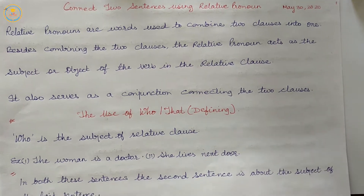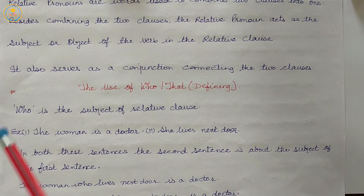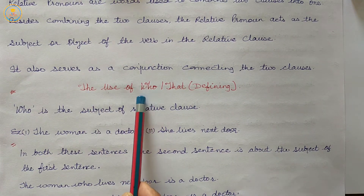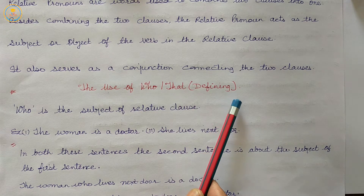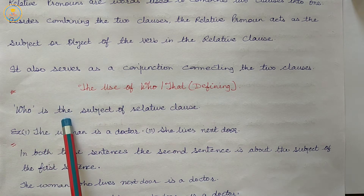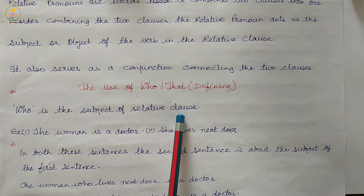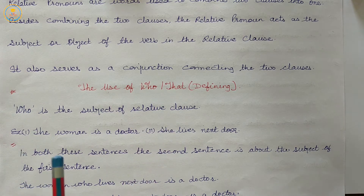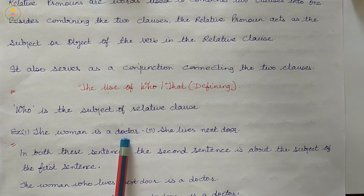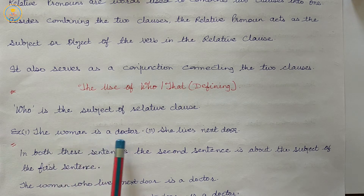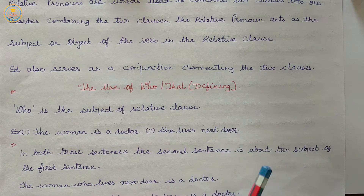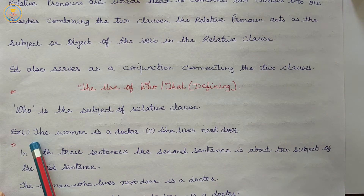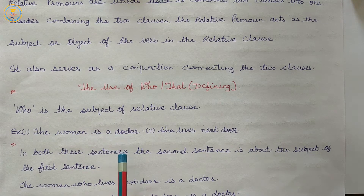Let us start. The first use is who or that in a defining clause. Who is the subject of the relative clause. Example: the woman is a doctor. She lives next door. The first sentence is 'the woman is a doctor' and the second sentence is 'she lives next door.'